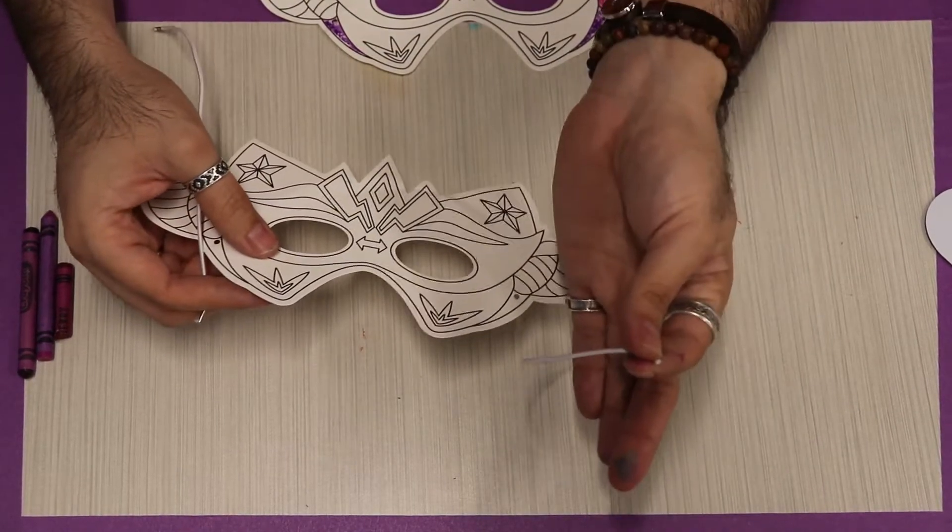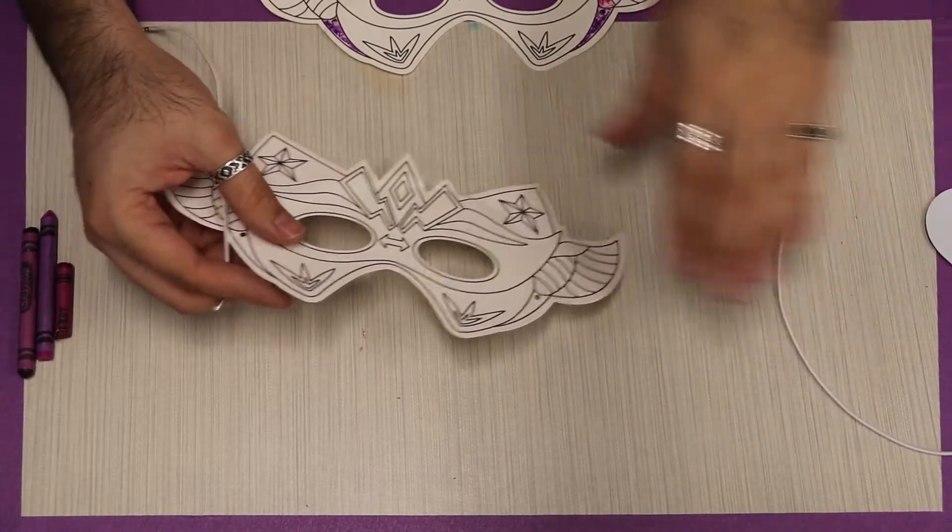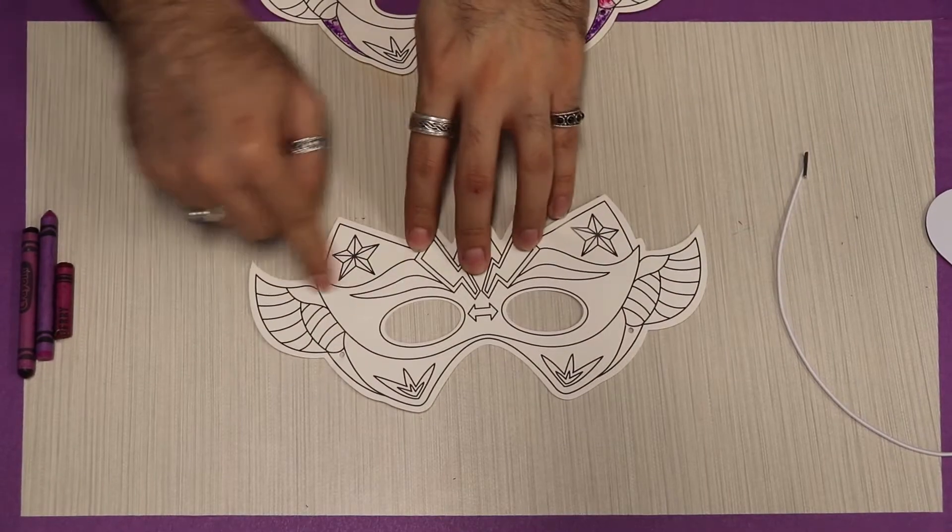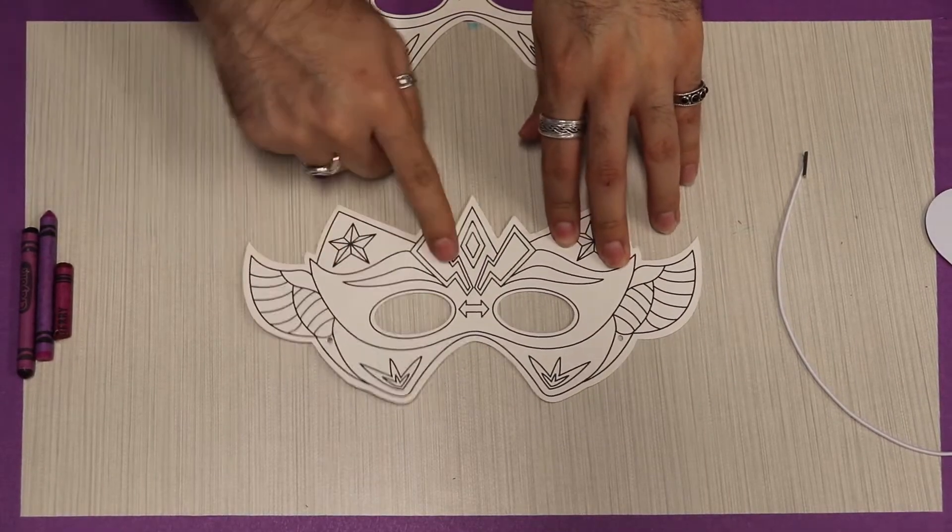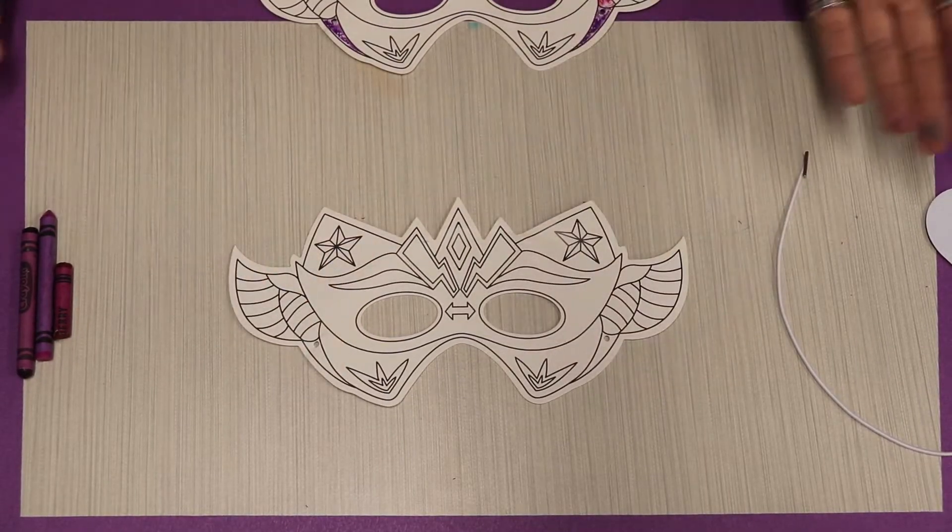Fold down like so and just pass them back through the holes where they're put through. And once you get this off, put it to the side. Don't lose it. It's important. But now it makes it a lot easier to color and now you can color on a flat surface.